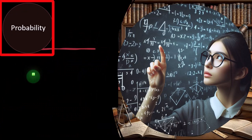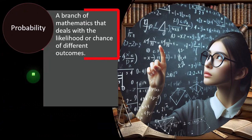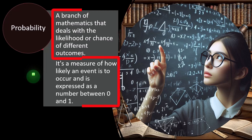Question: what is probability? Probability is a branch of mathematics that deals with the likelihood or chance of different outcomes. It's a measure of how likely an event is to occur, and is expressed as a number between zero and one.